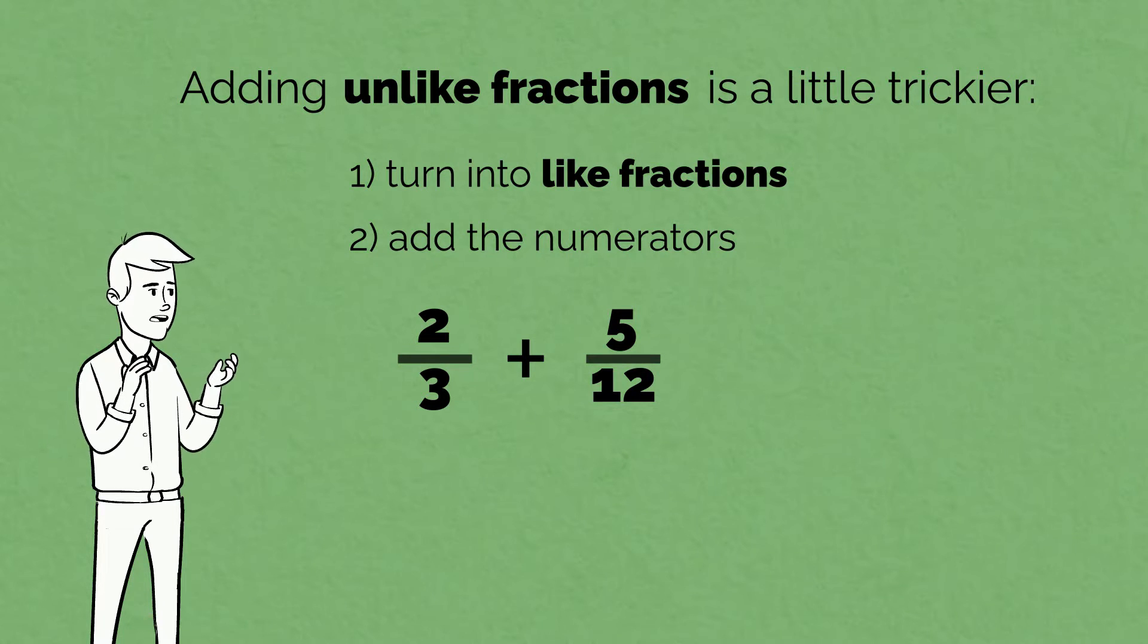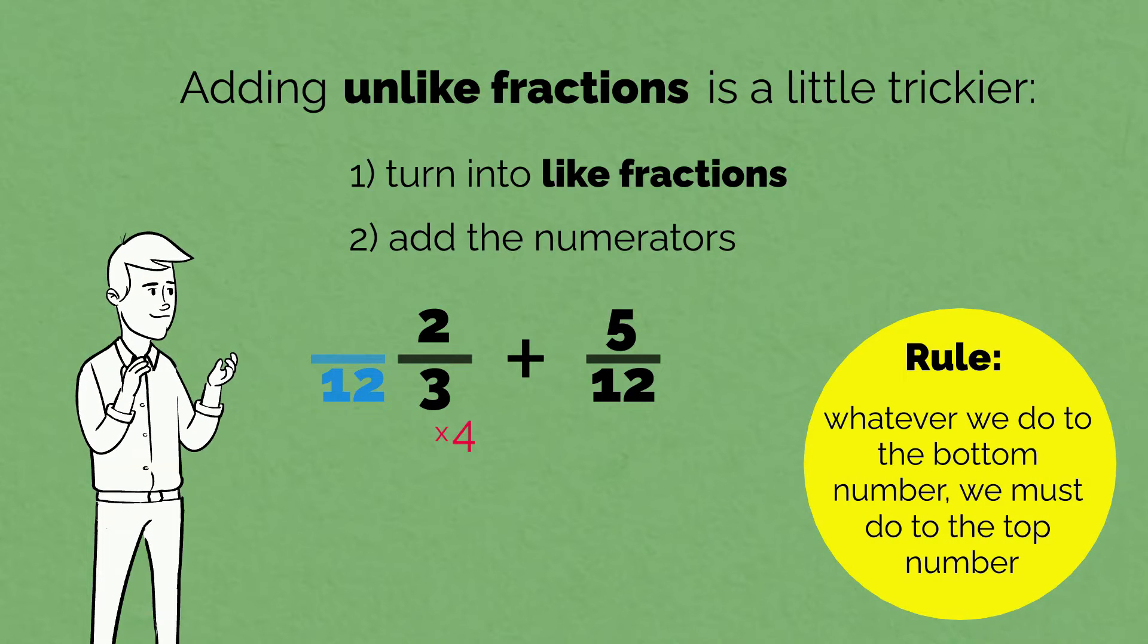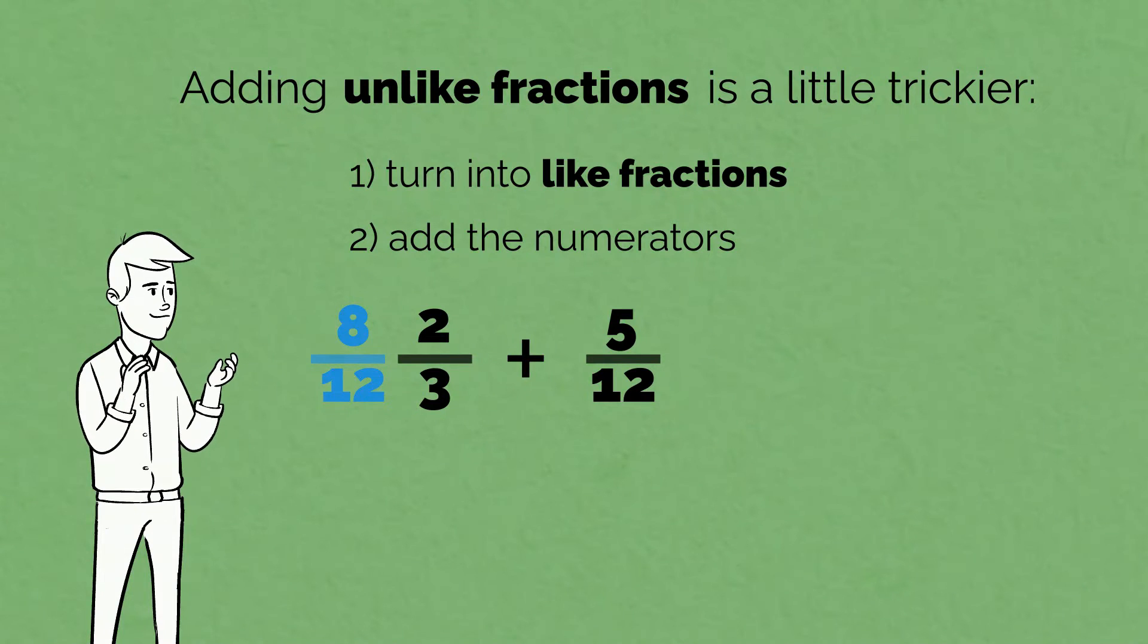First, we think, what do we multiply 3 by to get to 12? 4. 3 times 4 equals 12. Now we must remember the important rule. Whatever we do to the bottom number, we must do to the top number. 2 times 4 equals 8.